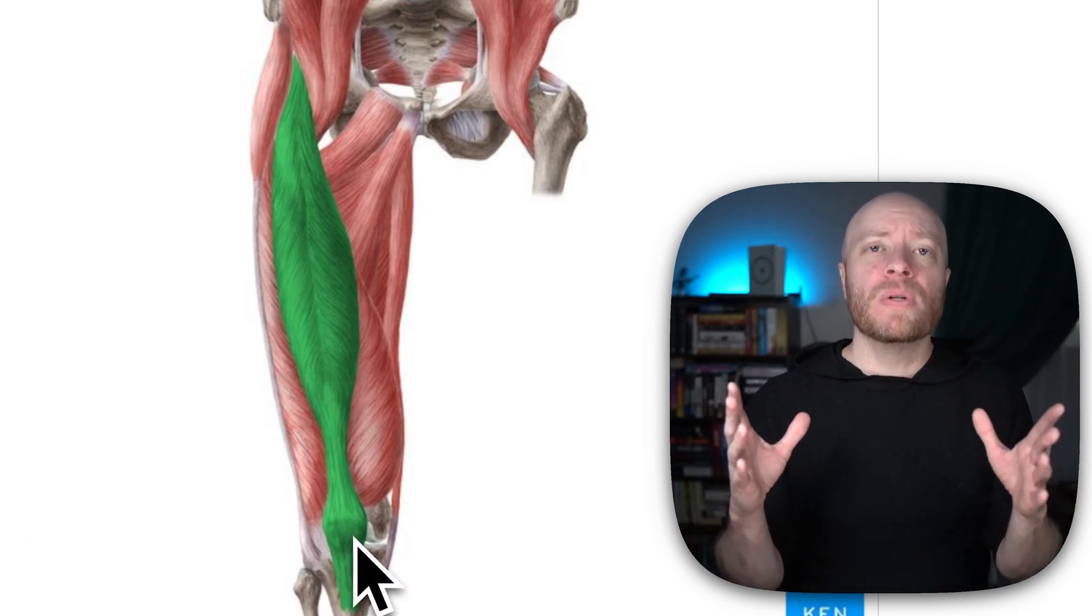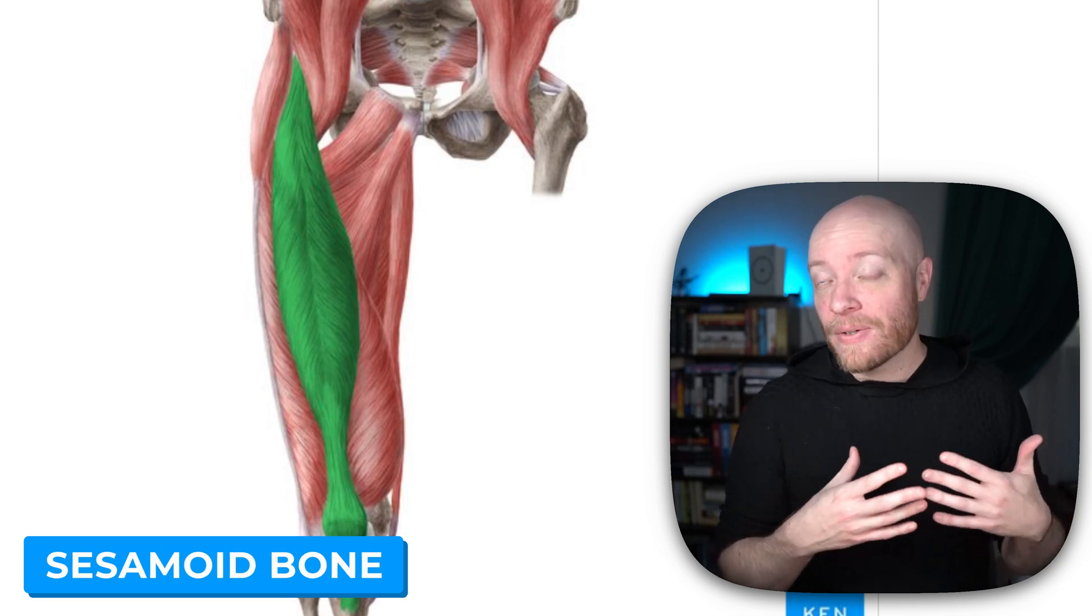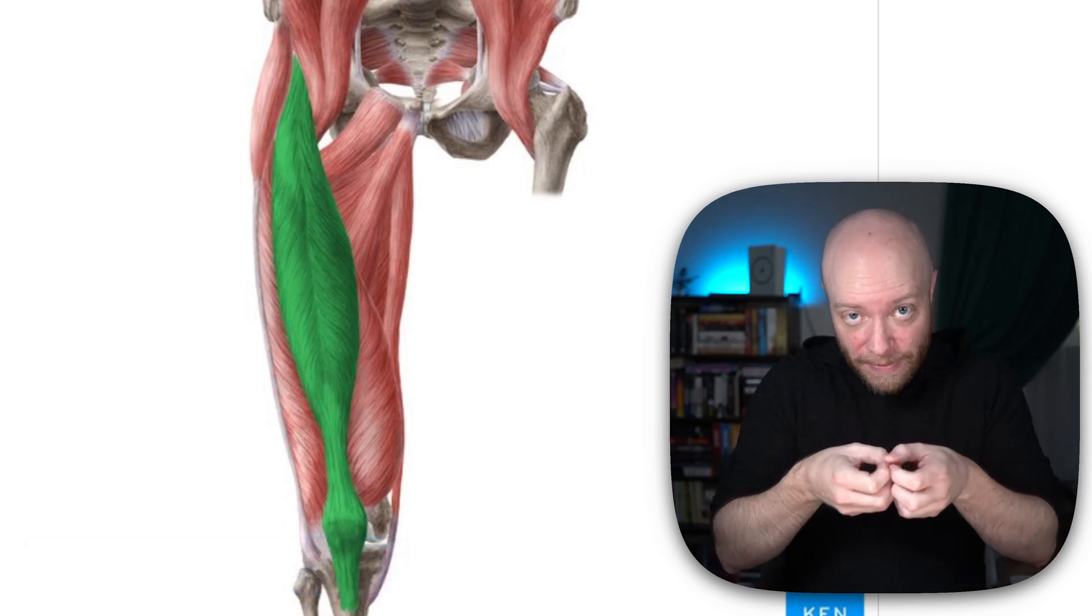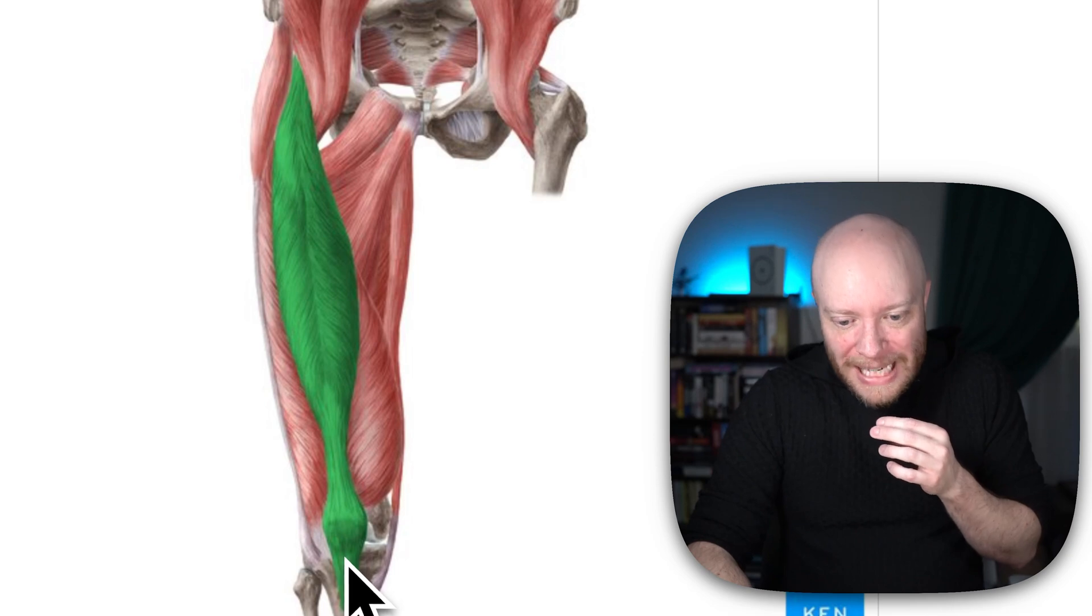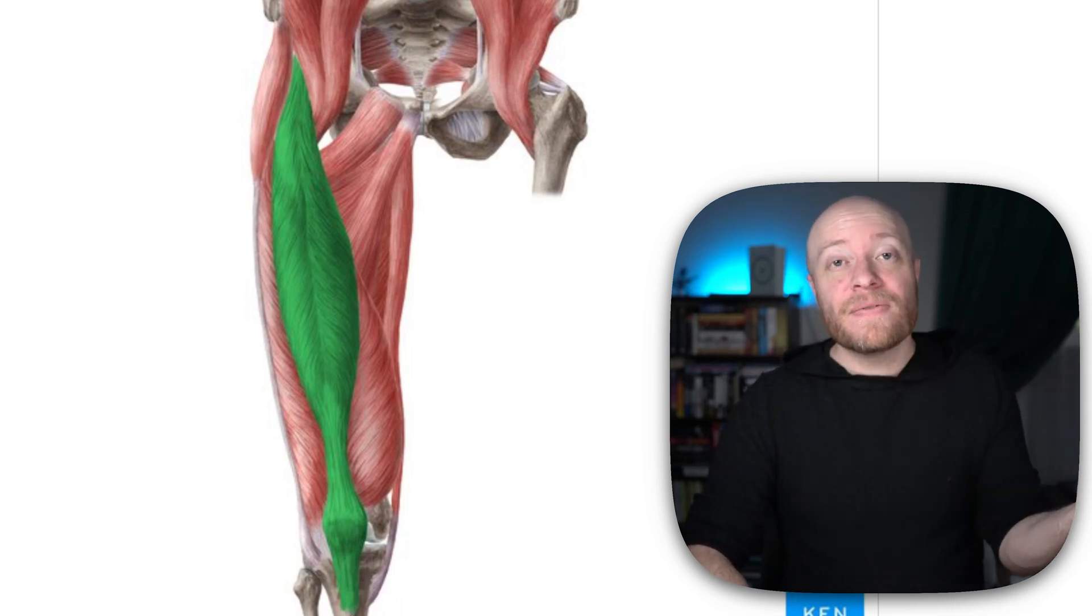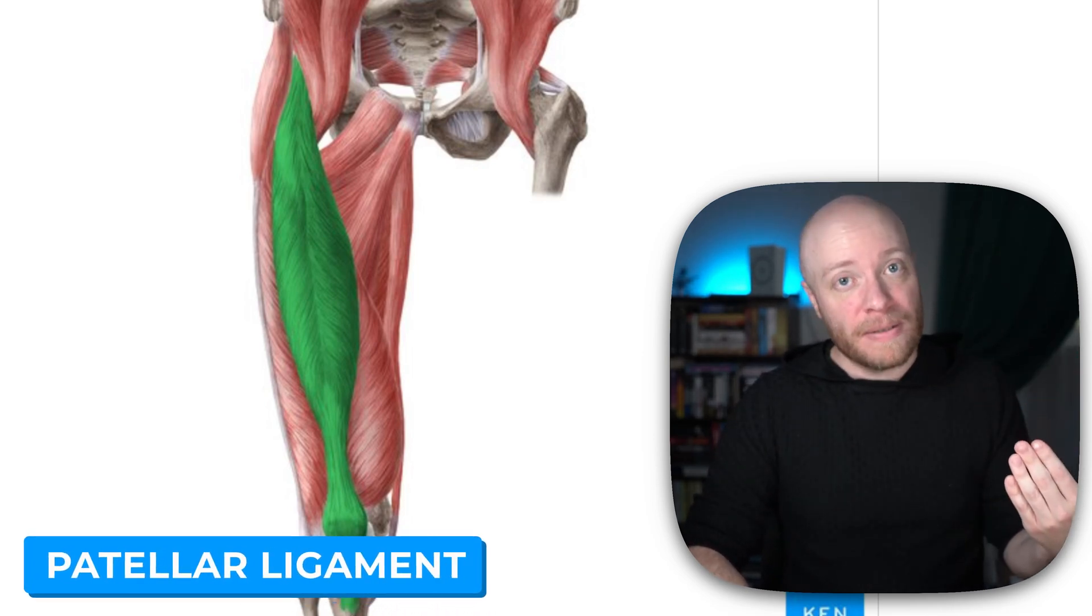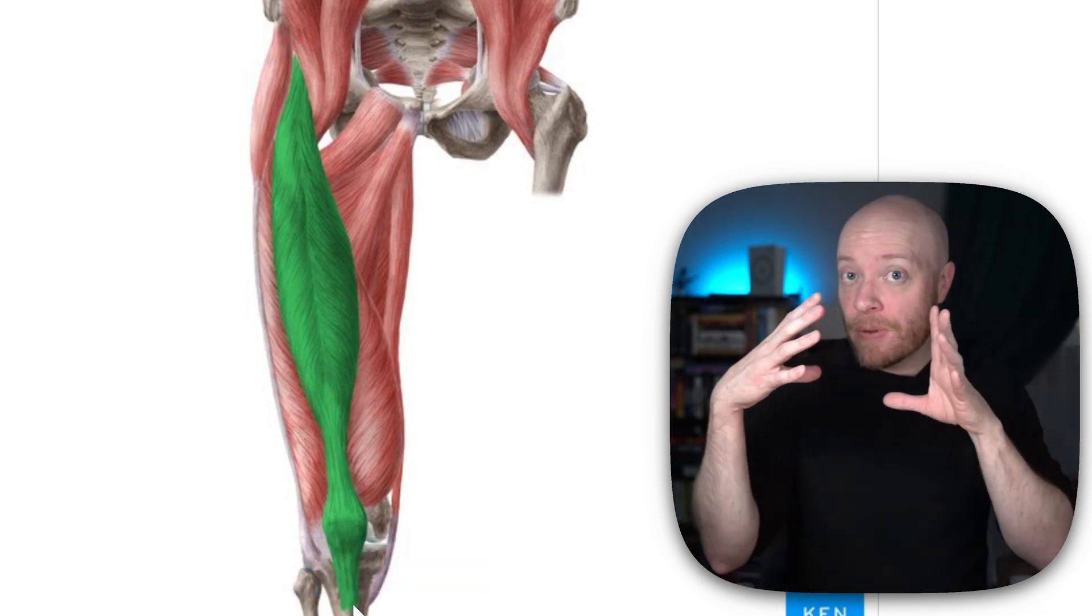Now the patella is an example of a sesamoid bone. A sesamoid bone is just a bone that is developing and growing inside of a tendon. But then coming out of that tendon is a bunch of connective tissue that we call the patellar ligament, because ligaments connect bone to bone.